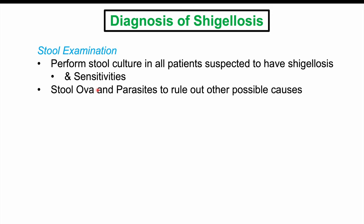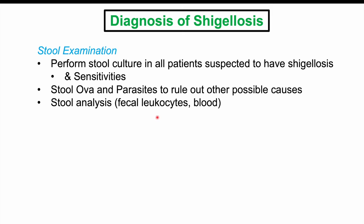Stool ova and parasites can also be performed to rule out other possible causes. On stool analysis, fecal leukocytes and fecal blood can often be seen in roughly 70% of patients.